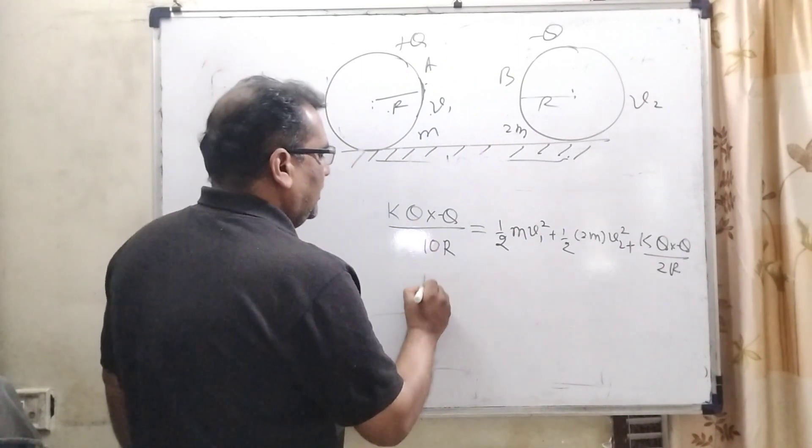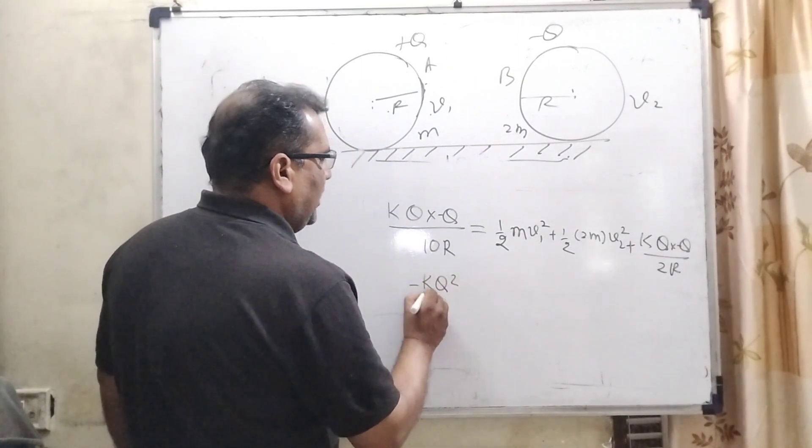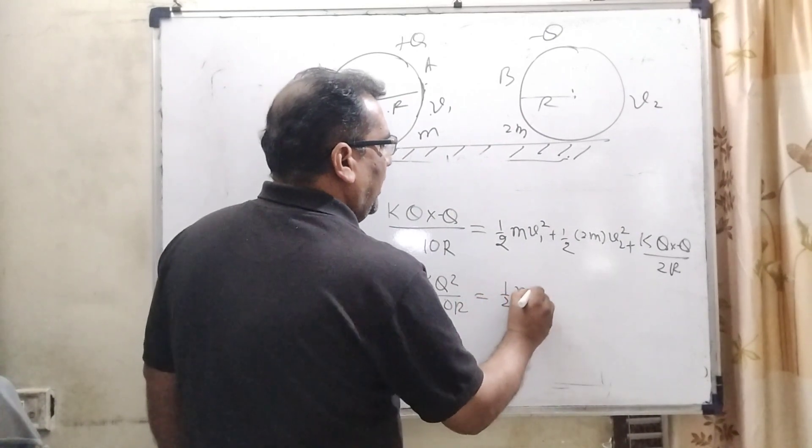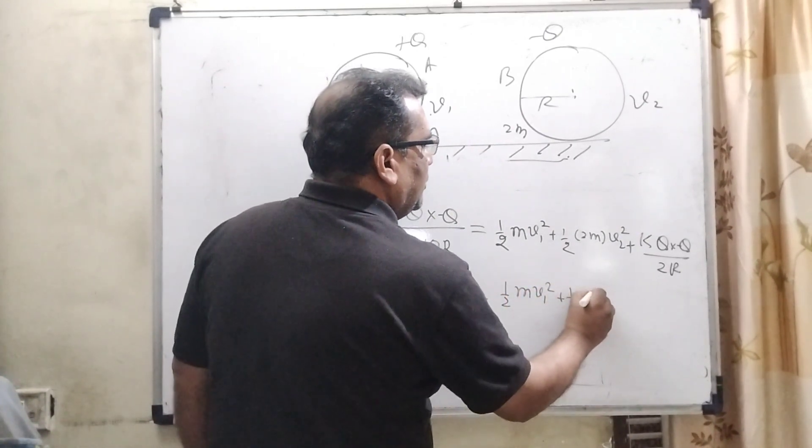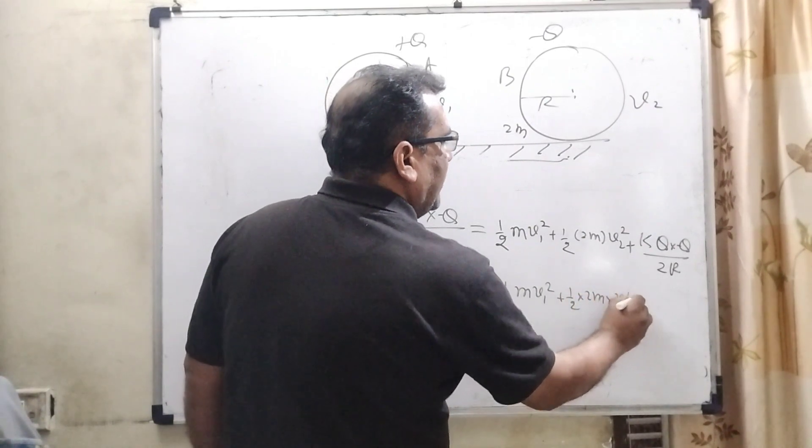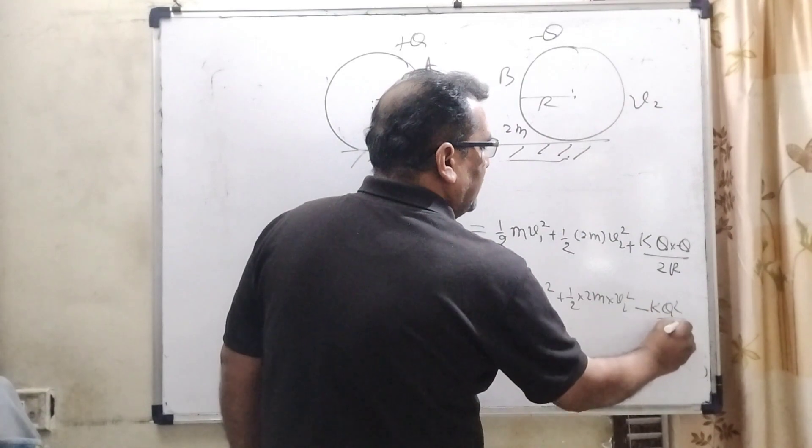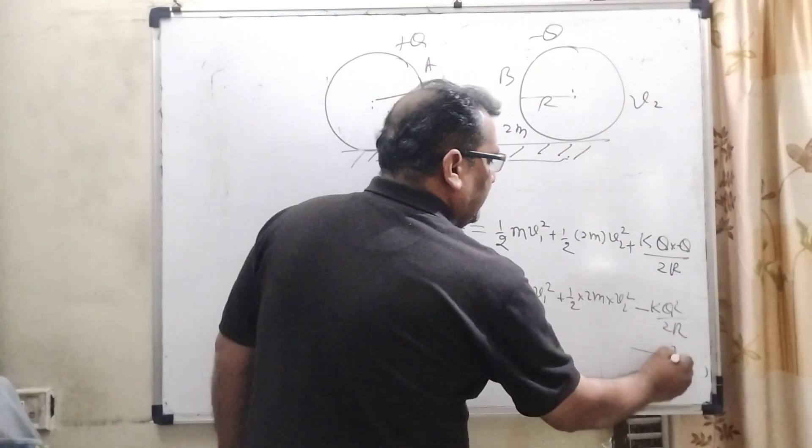So, here, minus KQ square upon 10R is equal to 1 by 2m V1 square, 1 by 2, 2m V2 square minus KQ square upon 2R. Now, let us see, this equation is 1.